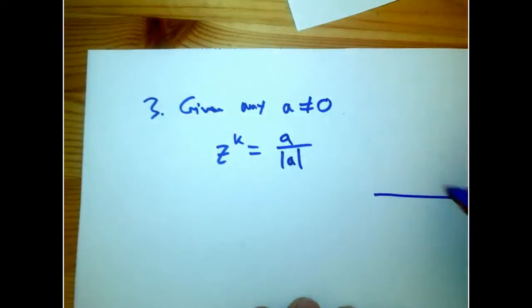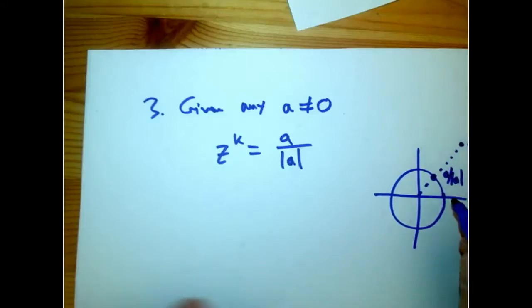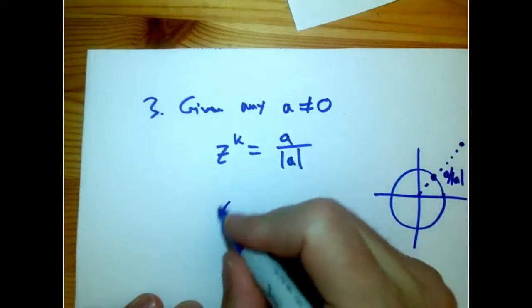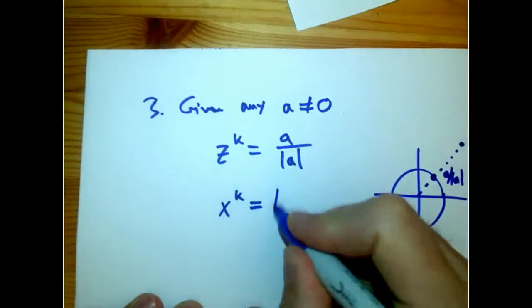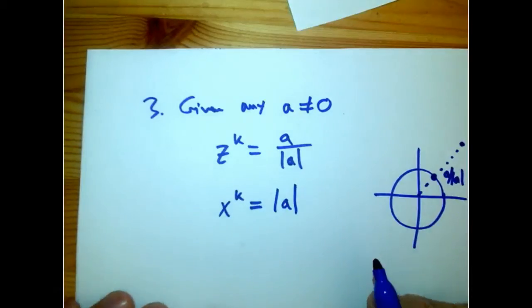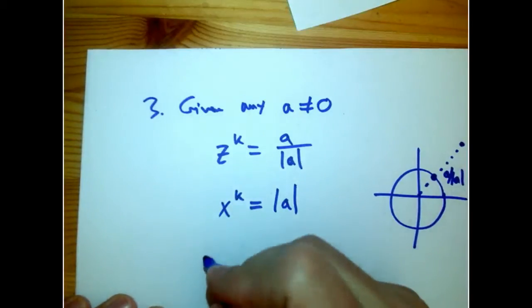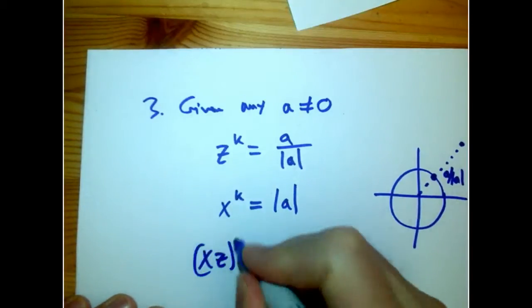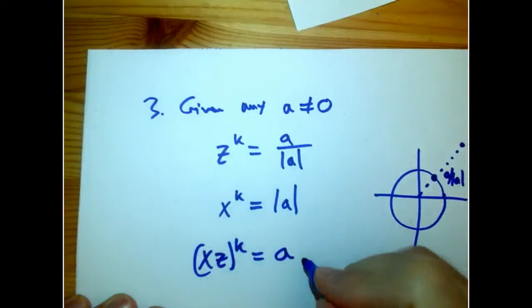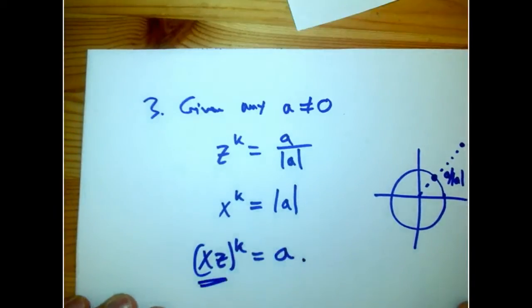So what we do is we find z^k. We don't directly find a root for this guy. What we do is we find a root for a over magnitude of a. That's going to be z. And then find a root of the magnitude. That's the ordinary real number. And then clearly xz to the k is going to be a. And so that's the number we wanted.